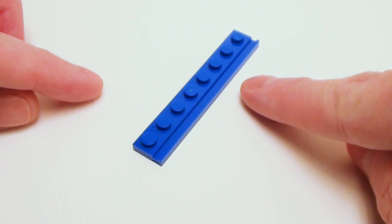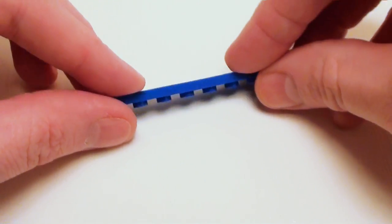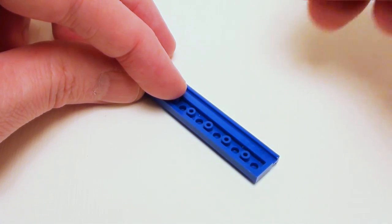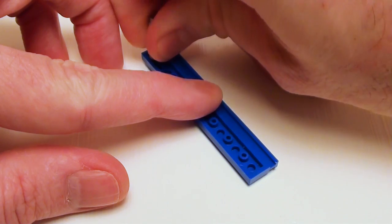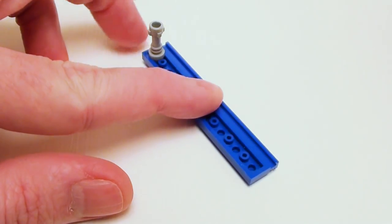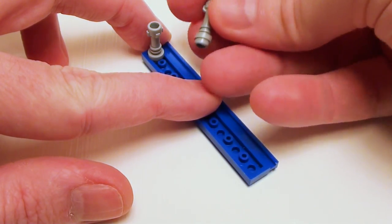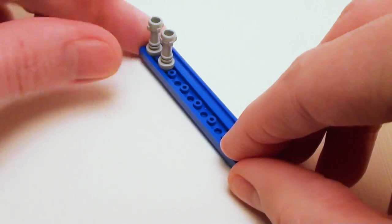To begin the construction of the ladder, take a 1 by 8 plate with slide. We're going to flip this over. We're going to take several of these light sword handles. Yes, we're going to be using light sword handles for the ladder. We're going to place eight of these inside these areas.